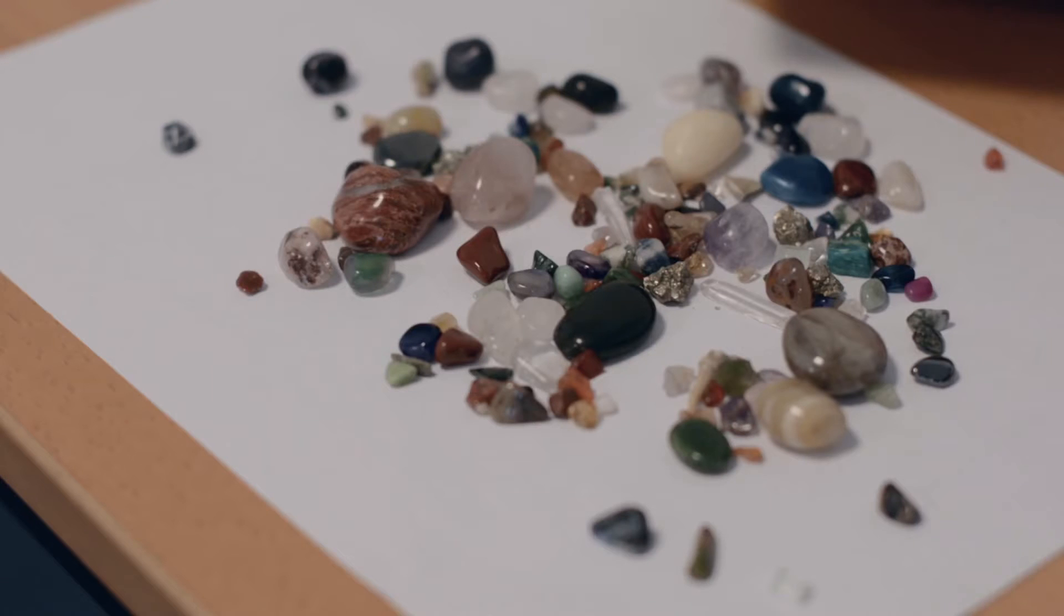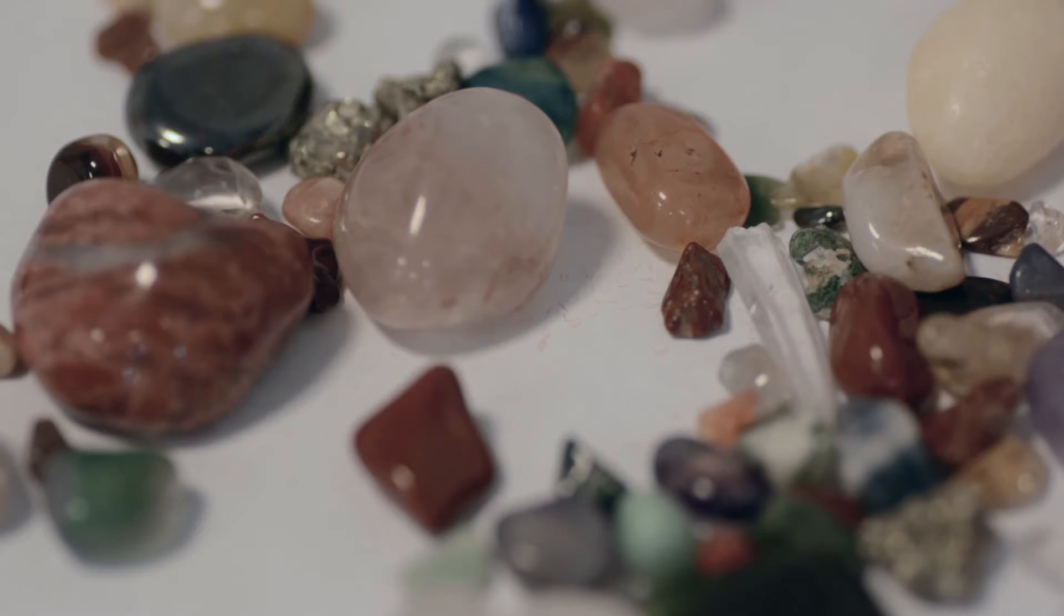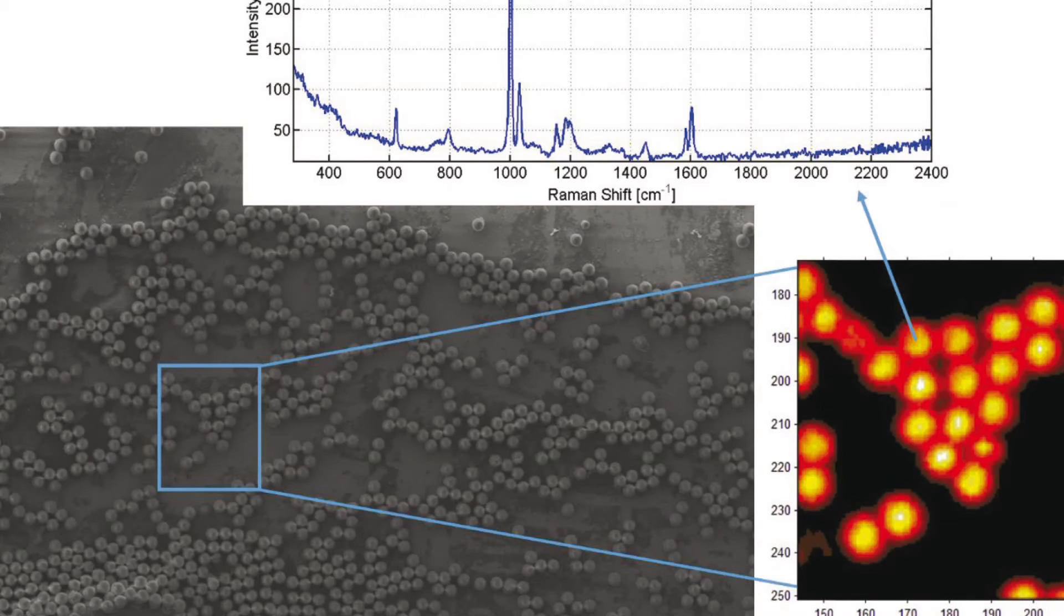However, what it does not show is which molecules and minerals are located in different positions of the sample. Raman spectroscopy is a well-known and versatile optical method that does offer the desired analytical power for molecule recognition and detection.